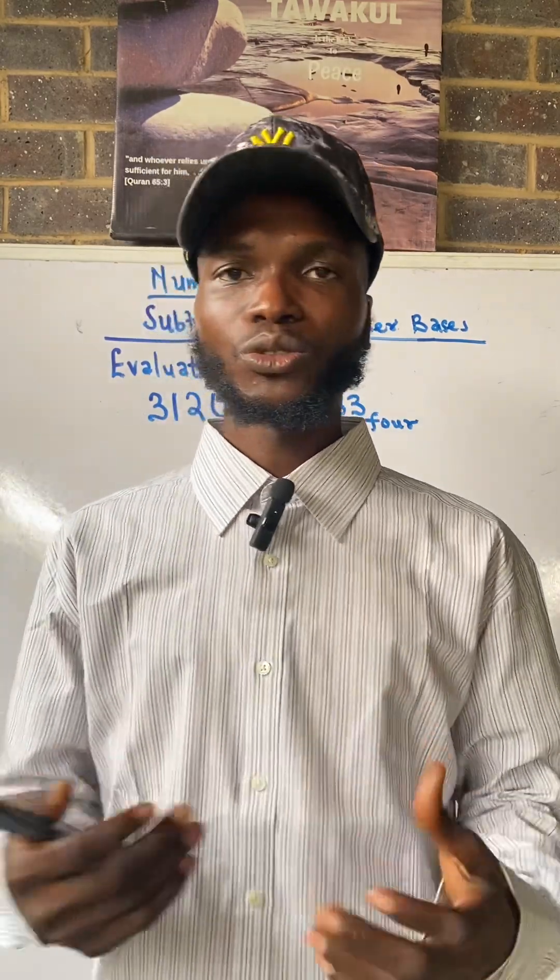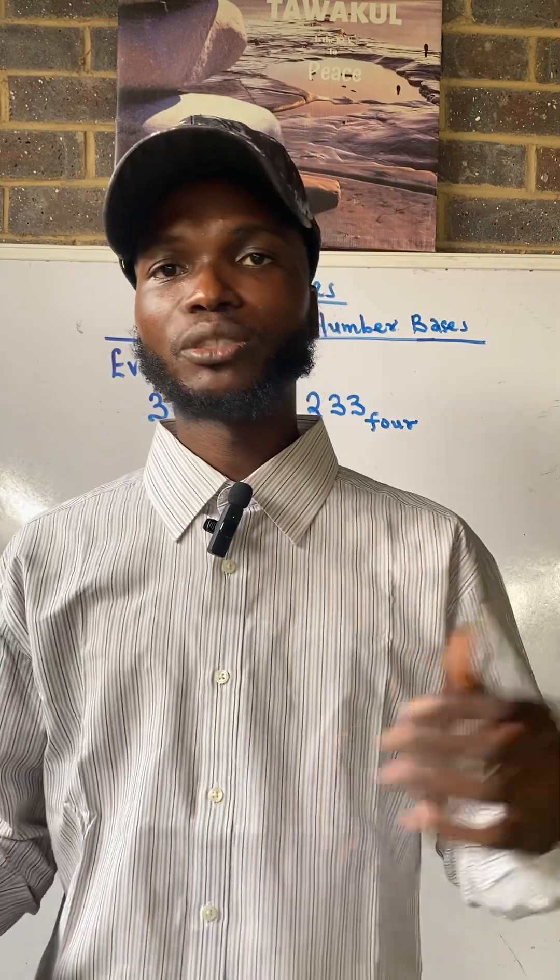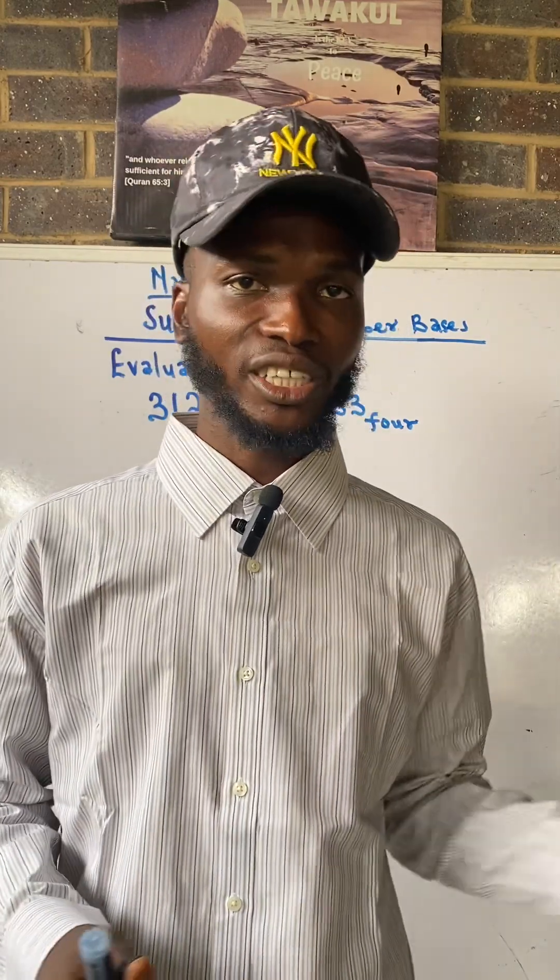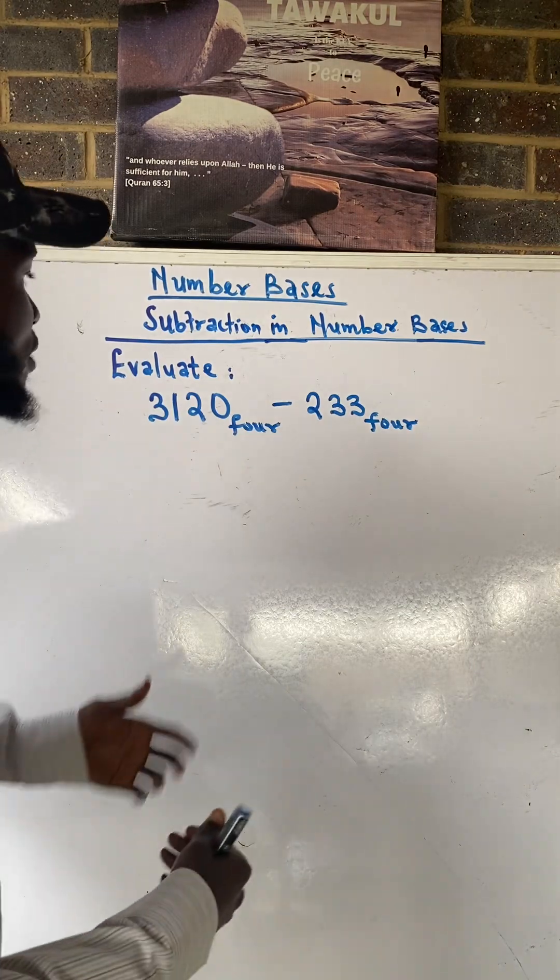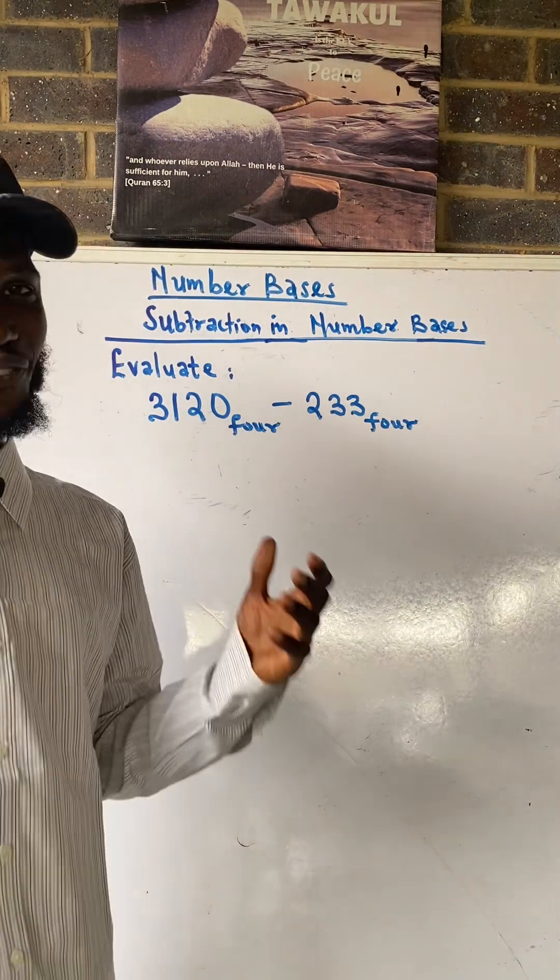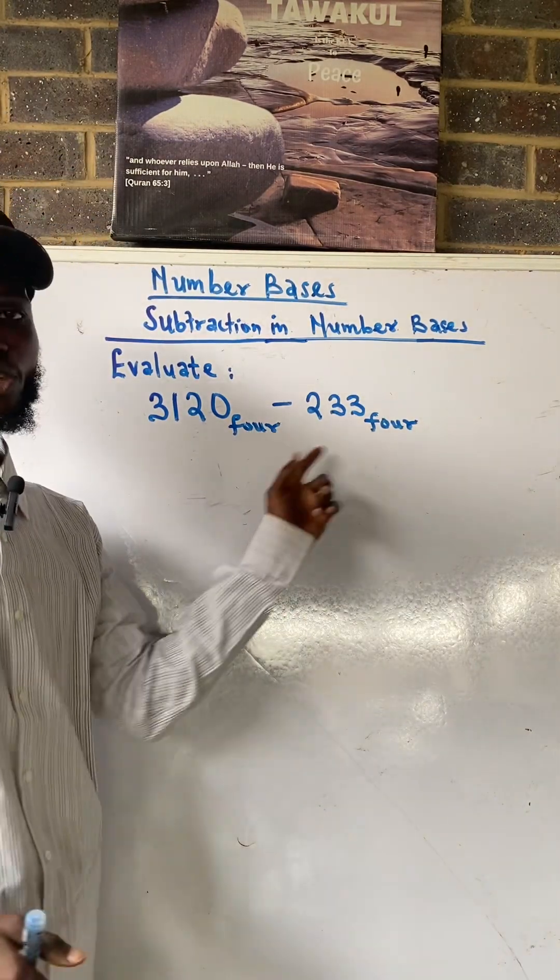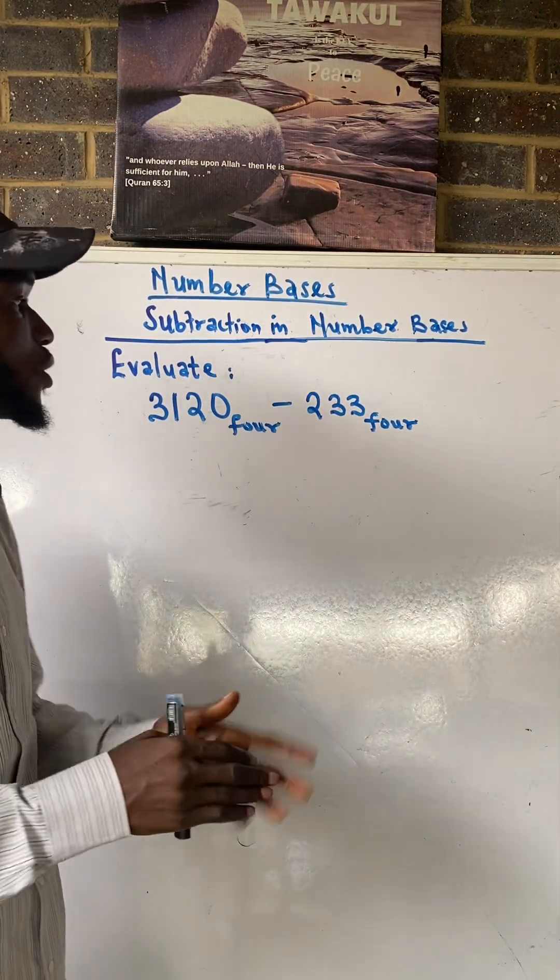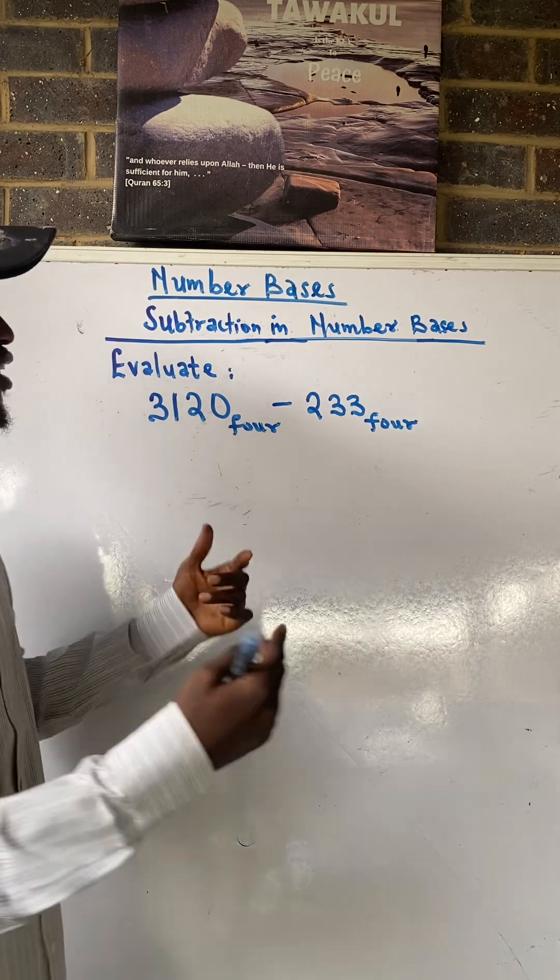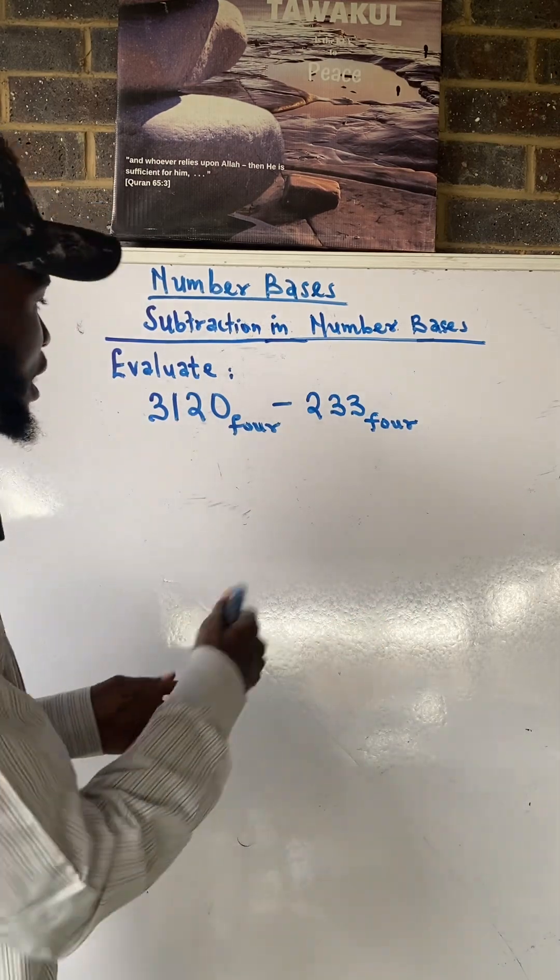So I have dealt with addition in the previous video, you can check that. Now first of all, you know my usual thing, I have to let you know: you cannot add two numbers that are not in the same base. You must first ensure that they are in the same base by converting both of them to the same base. Now these two numbers are in base four, thank God.